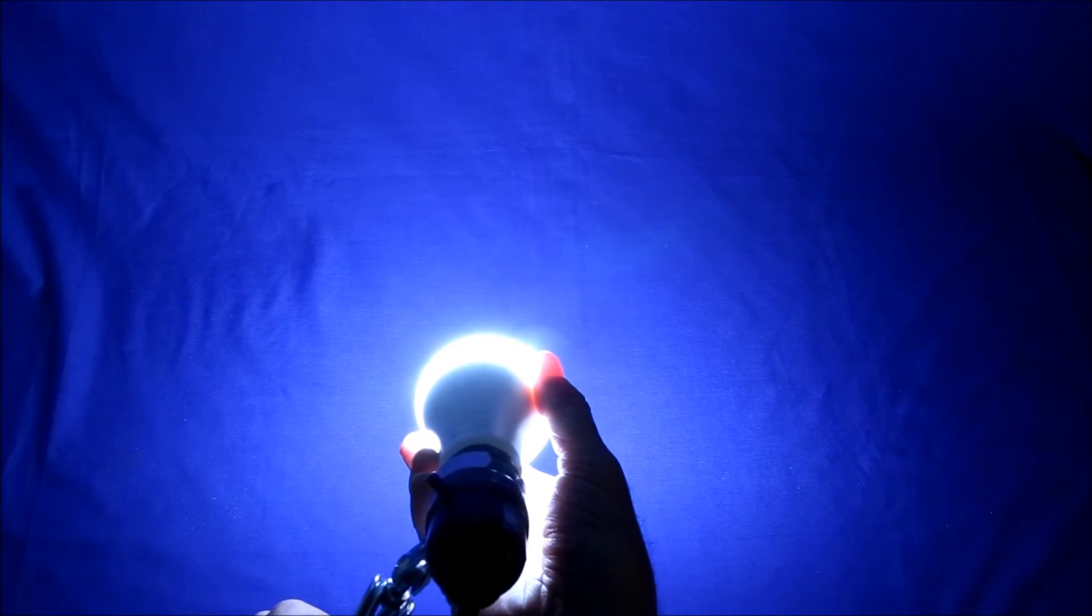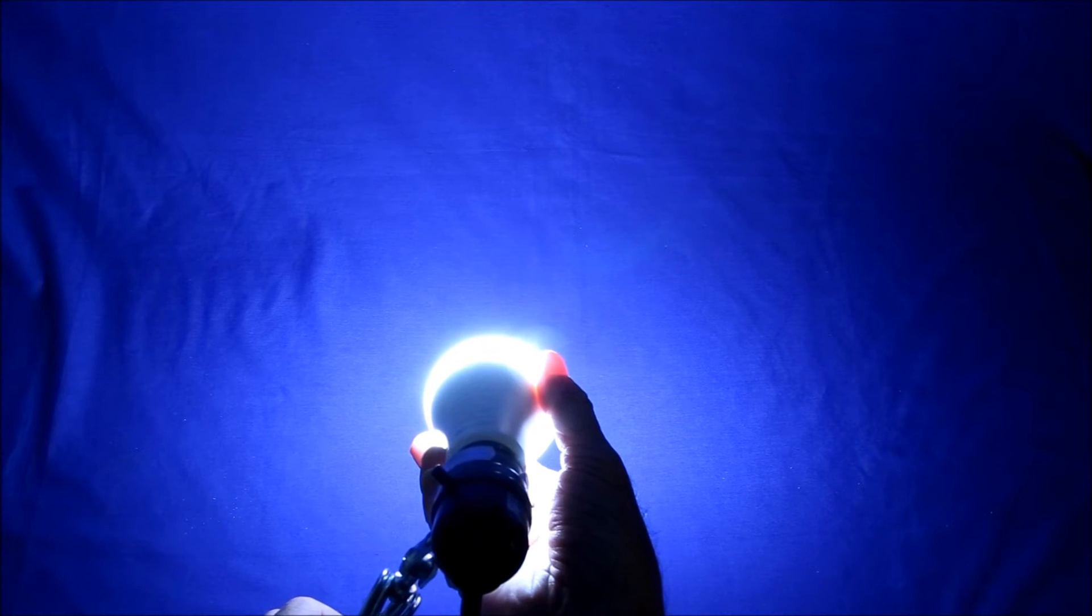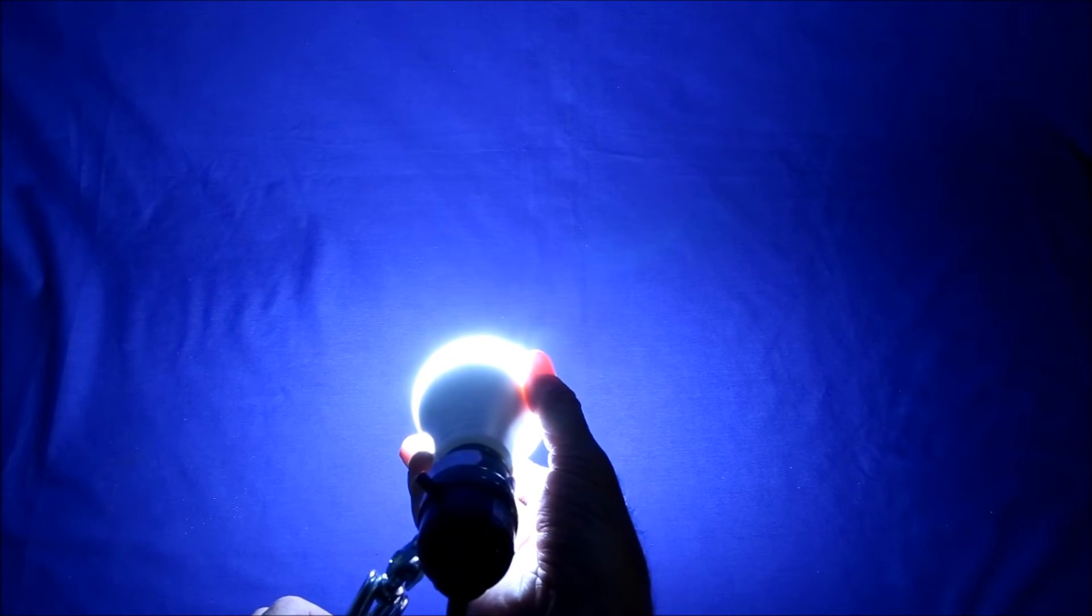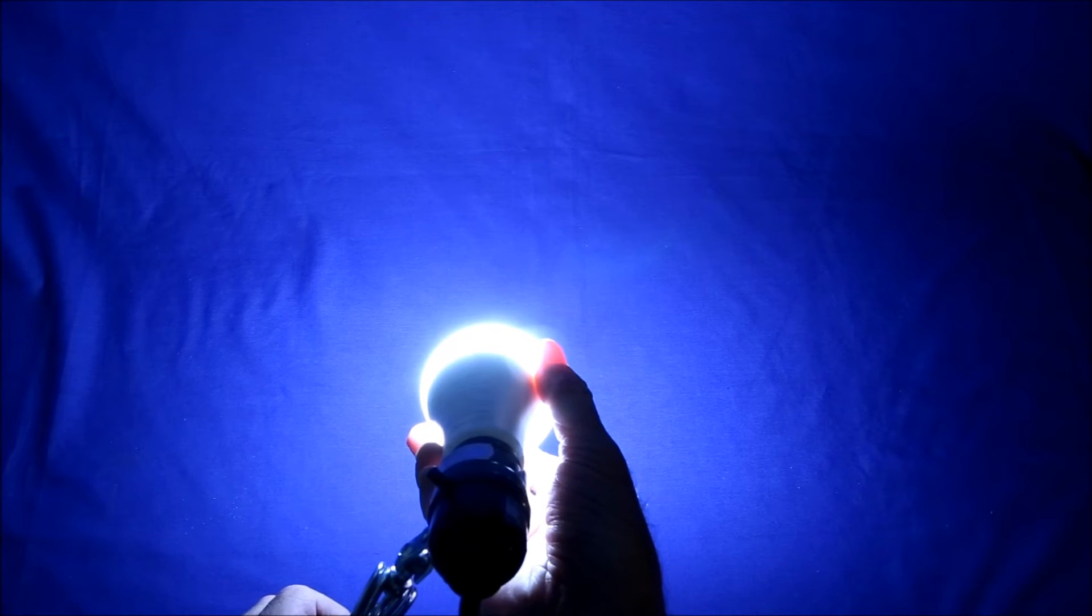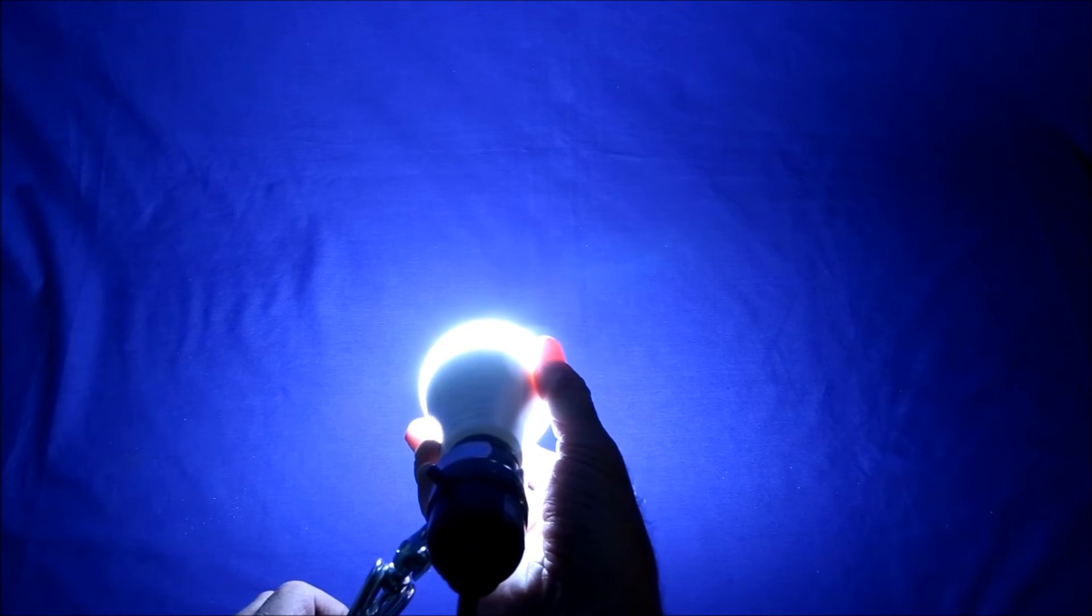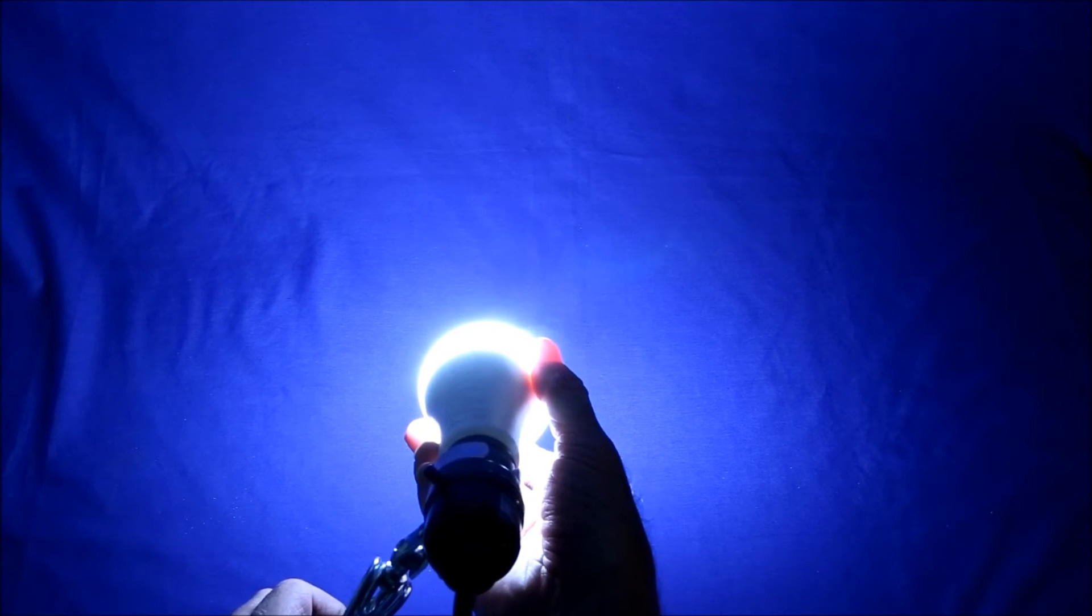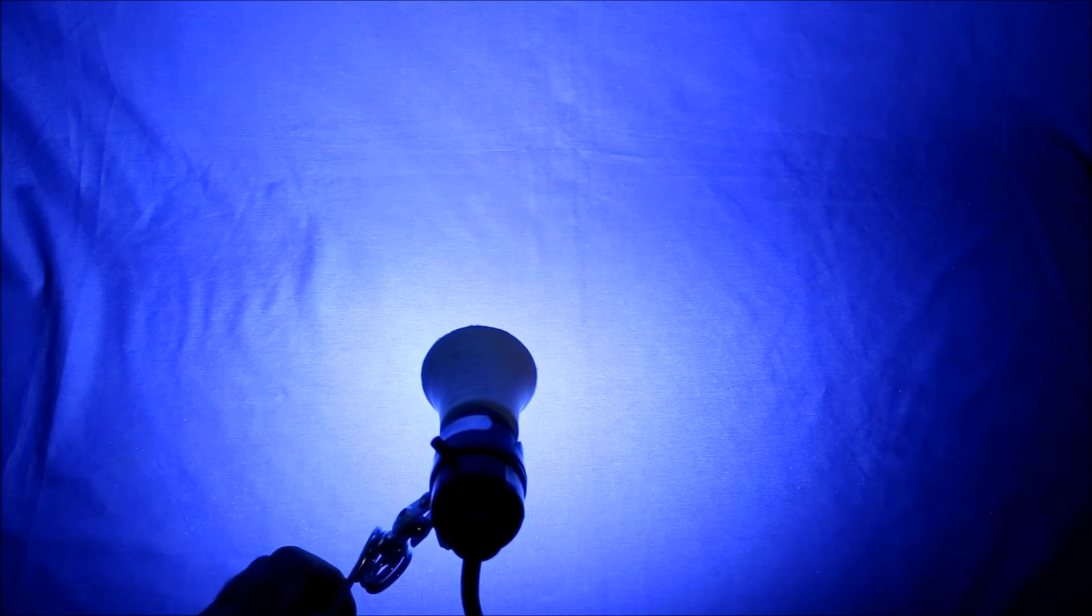Alright, here's what the beam spread looks like with the globe diffuser on. And it's fairly uniform. The bulb is about 18 inches away from the backdrop. Now I'll take the diffuser off and you can see it turns into almost a spotlight.